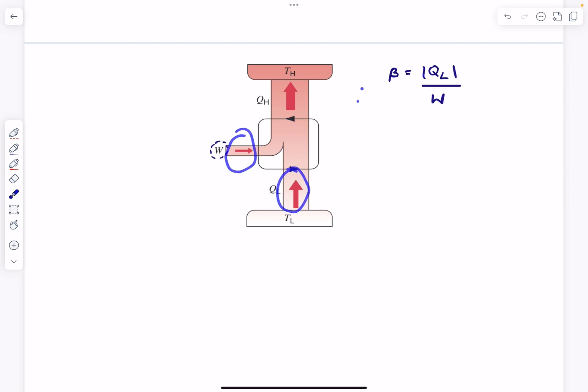If we apply first law of thermodynamics on the entire cycle, we can say W plus QL equals QH or we can also write W as mod QH minus mod QL. We can convert this expression in terms of the temperatures of reservoirs as well.